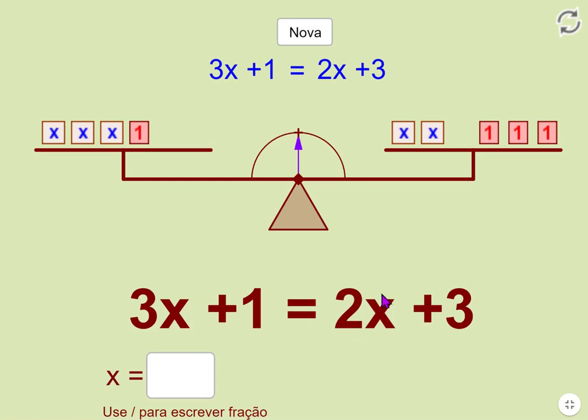Okay guys, welcome back. In this example, this linear equation is visualized for us here where we don't know what X is. That's the usual thing with X - we don't know what it is. But three of them plus one unit is the same as two X's and three units.